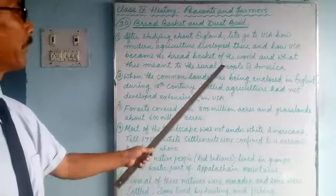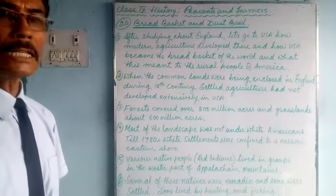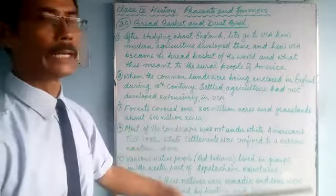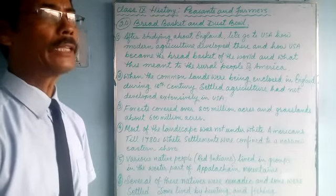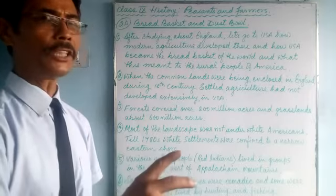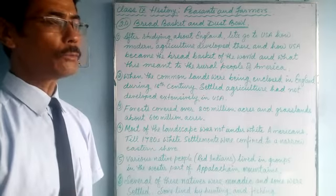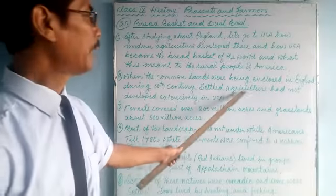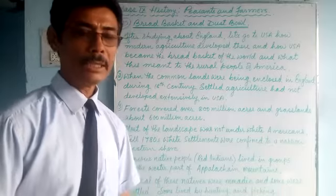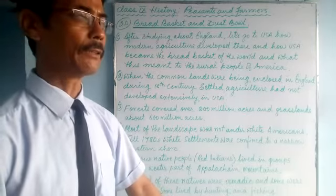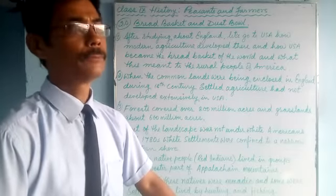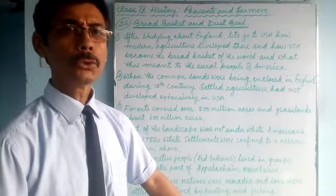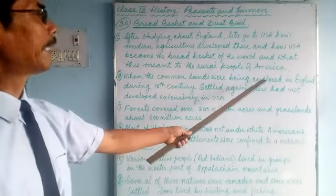It's a long story. Let's talk about what this meant to the native people who originally lived there. When enclosures were taking place in England during the 18th century — for grain food — a settled agriculture had not developed extensively in America. The native people there lived by hunting, gathering fruits, wild berries, and fishing. They were nomadic in nature.